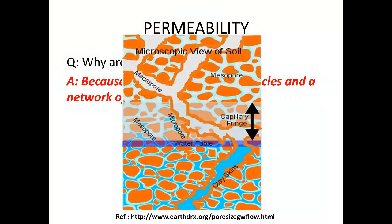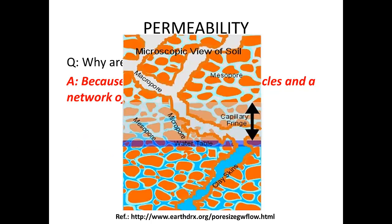Here is a simple graphical representation of these interconnecting pores between the solid particles. Notice this line — the so-called water table — which represents the depth at which water is found in soils. Water will flow through these spaces, the pores, that are present between the solid particles. Not all soils are created equal. Depending on how wide these pores are — that is, how wide the air spaces are between the solid particles — that will result in different permeability of different soils. Different soils will drain water faster or slower.